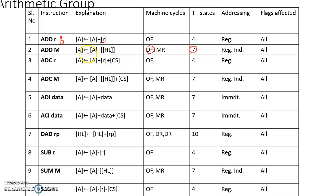For addressing modes in ADD M: for the accumulator operand, the addressing mode is implicit since it is known by default. For the second operand, the content is from a memory location indirectly pointed using the HL register pair, so the addressing mode is register indirect addressing mode. All status flags will be affected by this instruction.